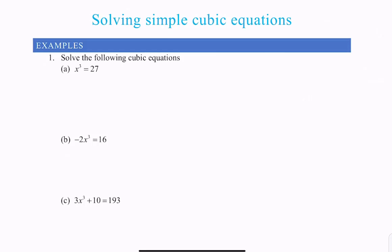So if I have x cubed equals 27, the opposite of cubing something is to find the cubed root. So I say x equals the cubed root of 27, and then I can simply pick up my calculator and I get the answer of 3.